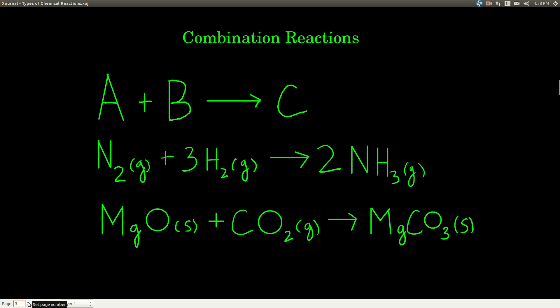In a combination reaction, what happens is two, or once in a while more than two, but usually just two things combined to make one. So we might write it like this: A plus B goes to C. Examples here would be nitrogen gas plus hydrogen gas making ammonia gas, and I've balanced these equations already for you. Two things, nitrogen and hydrogen, combining to make one, ammonia, or solid magnesium oxide and gaseous carbon dioxide combining to make magnesium carbonate solid.